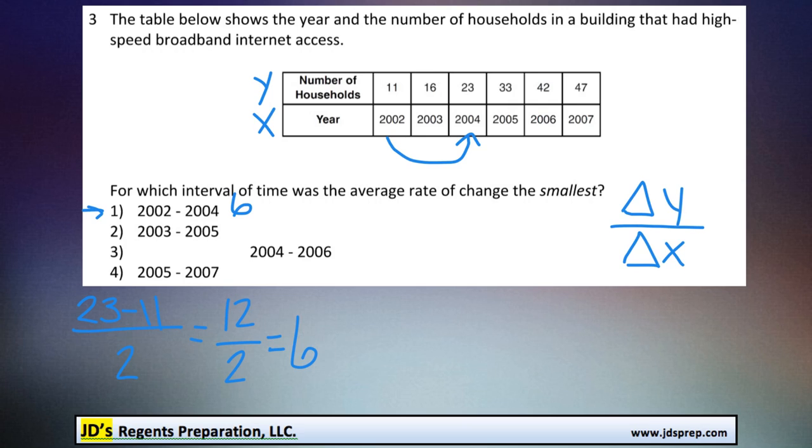Now let's take a look at the next one. From 2003 to 2005, from here to here. It looks like the number of households that had internet increased from 16 to 33. If we subtract those, we'll find out the difference, and that will get us 17. So the difference is 17 in the number of households. We're going to divide that by the difference in years. Again, that's a two-year difference. And 17 divided by 2 would get us 8.5.